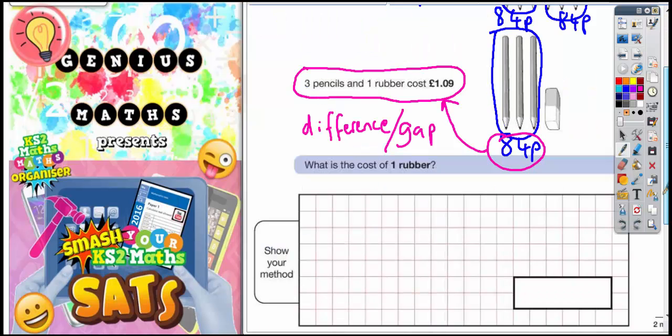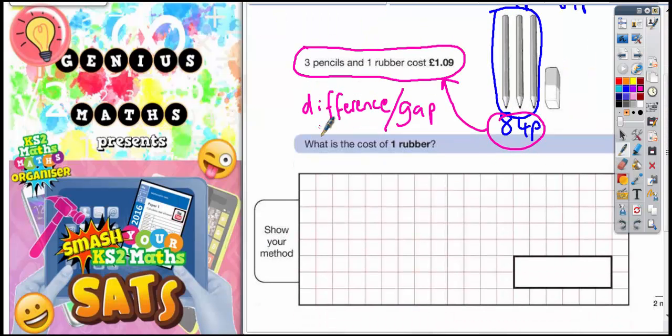we'll know the cost of the rubber. So to find the difference between any two numbers, you must subtract the smaller one away from the bigger one. So if we start with £1.09, which is the total cost, and subtract the cost of the three pencils, which is 84p. Now remember, 84p with a pound sign would be 0.84, so I need to put 0.84 in here. So it's £1.09 subtract 0.84.